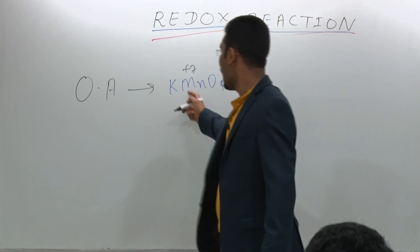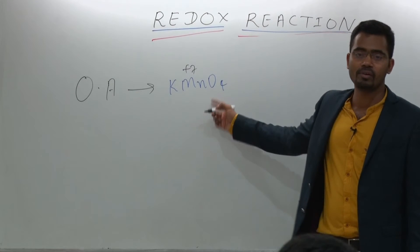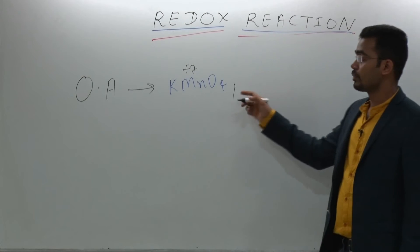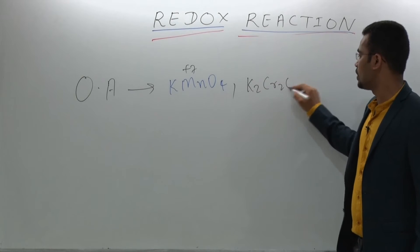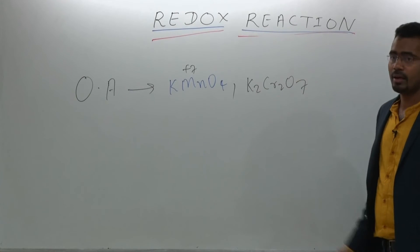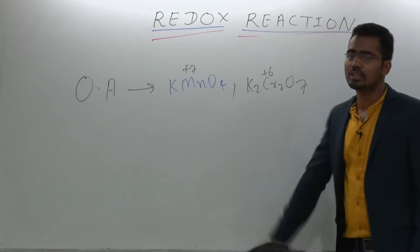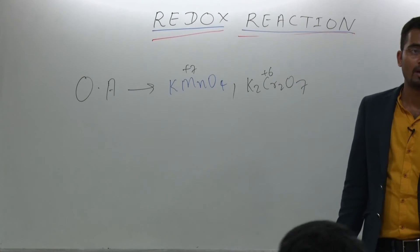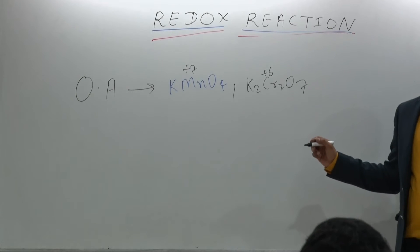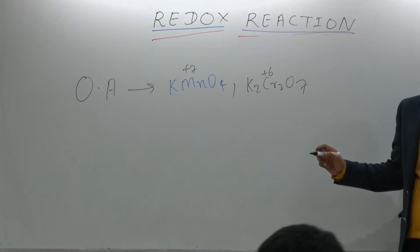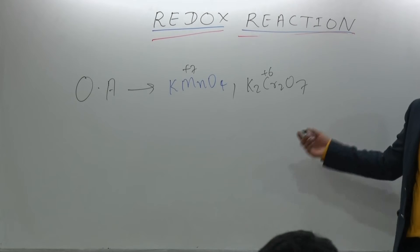Manganese has the highest oxidation state, that is +7, which is equal to its valence electrons. Therefore, it will act as an oxidizing agent. Another example is K₂Cr₂O₇. It has a +6 oxidation state, which is also equal to its maximum oxidation state. So, these are examples of oxidizing agents.